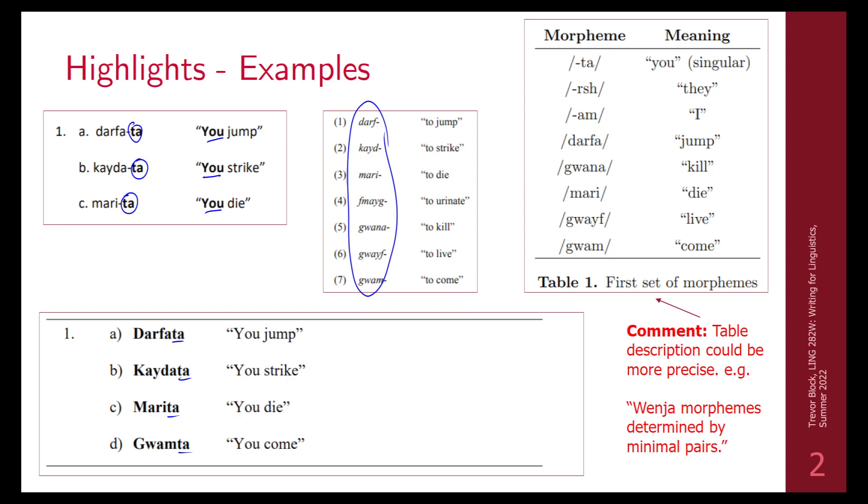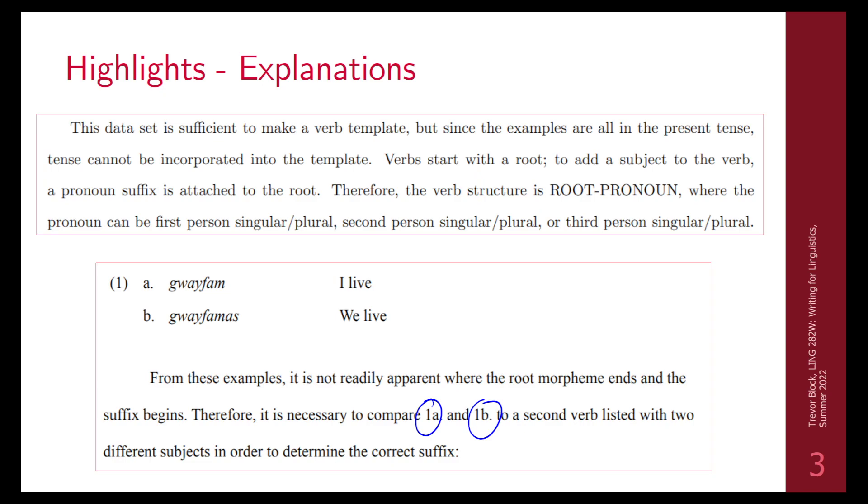Here's an example of a table of all of the morphemes found. In this paper there were two sets of morphemes, one for the process of elimination method, one for the minimal pair method. I think that this table could use a better description, something more precise, like when morphemes determined by minimal pairs. It doesn't really matter which method you use as long as it follows the standard conventions. Use the method that you enjoy, that you think makes your writing the clearest that it can be.